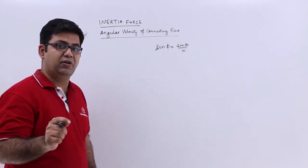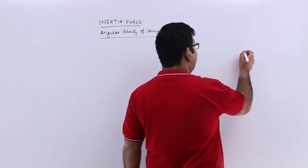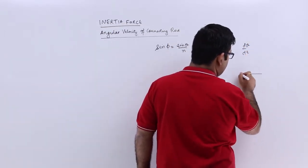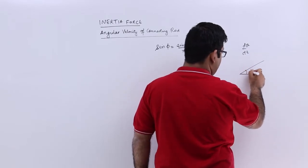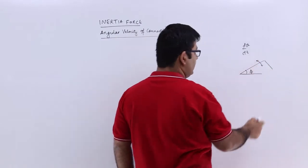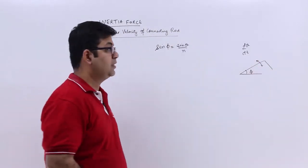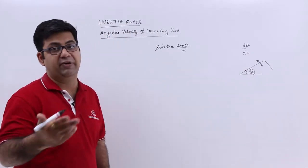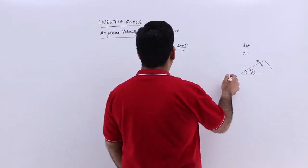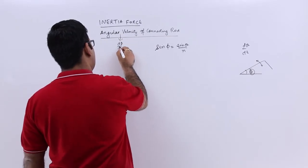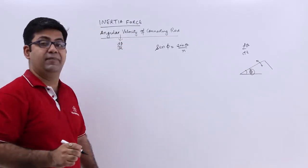The angular velocity of the crank is d theta by dt. If you remember the configuration, this is phi, so your connecting rod is oscillating with an angular displacement of phi, so the angular velocity of connecting rod would be d phi by dt.